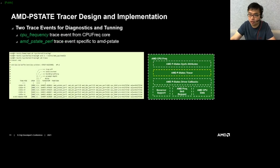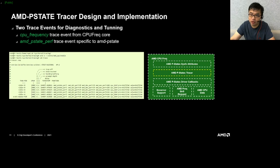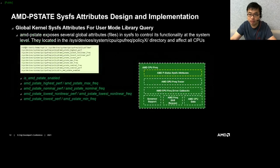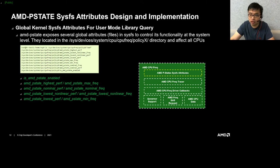There are two static trace events that can be used for AMD P-state dynamic diagnostics. One is the CPU frequency trace event, generally used by the CPUFreq framework. The other is the AMD P-state perf event, a trace event specific to the AMD P-state driver that can monitor all performance goals passed from the AMD P-state driver to the hardware at runtime. The AMD P-state also exposes several global attributes in sysfs to control its functionalities at the performance level.